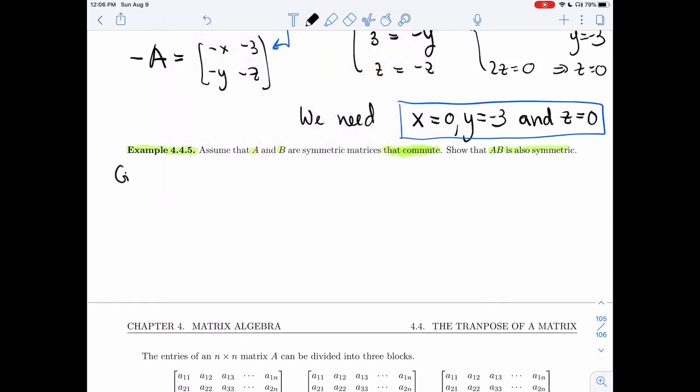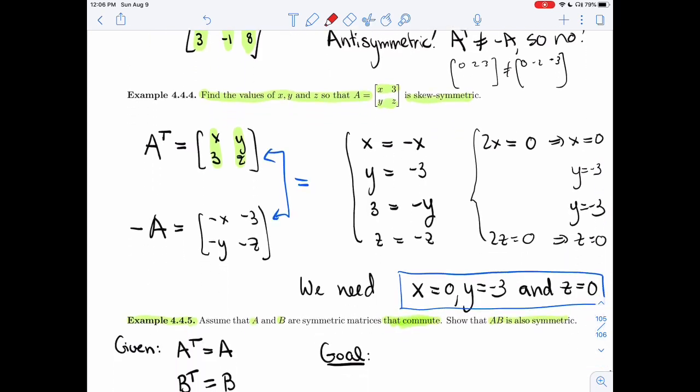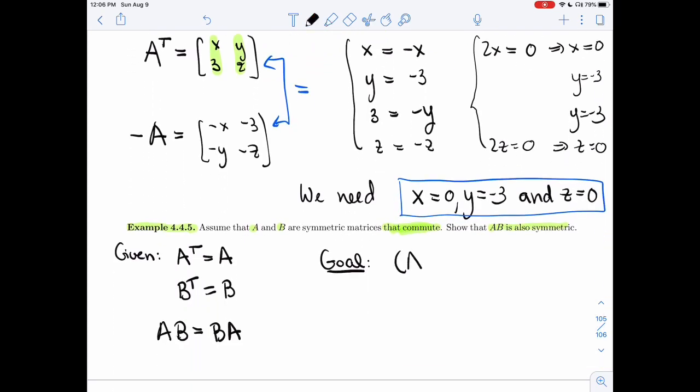All right. So here's what we're given. We're given A symmetric, so that means A transpose is A. We're given B symmetric, so B transpose is B. And we're given that the matrices commute. If you remember, that means that whether I take AB or BA, I get the same answer. So we're given all three of these conditions. And we want to show that AB is symmetric. So our goal is to apply this definition to AB. And so we want AB transpose to be AB.